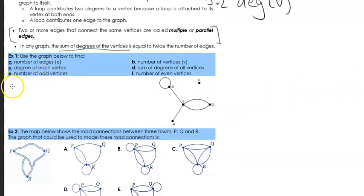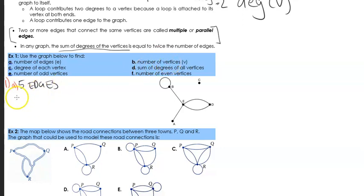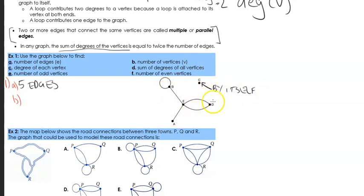Let's use what we know to answer the following questions using the graph below. For part A, the number of edges: one, two, three, four, five — we have five edges. For part B, the number of vertices: one, two, three, four, five. Despite this one vertex being by itself with no connected edges, it is still deemed a vertex — an important feature of the graph. So there are five vertices.